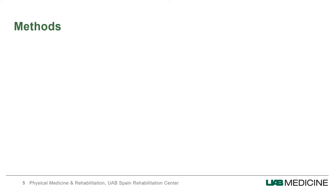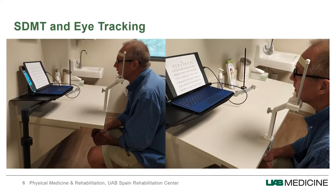Going into methods: the SDMT, the eye tracker, the chin rest, and the computer were set up at the MS clinic. The chin rest was used to make sure that head movements wouldn't interfere with eye movements in the tracking. We had 38 adults with MS but without clinical oculomotor impairments, because we are trying to measure the information processing speed associated with SDMT and not the oculomotor impairment that could also be measured by eye tracking.